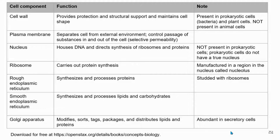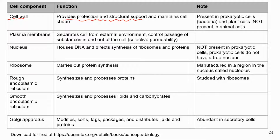Let's look at the cell wall first because it's the outermost structure of the cell. The cell wall is very rigid — it provides protection and structural support and also maintains the cell shape. A quick note: this particular structure is only present in prokaryotic cells, in bacteria cells — not all bacteria.